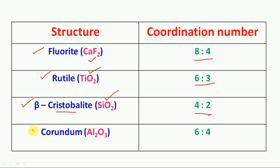Corundum, Al2O3, aluminium oxide. Coordination number 6:4.